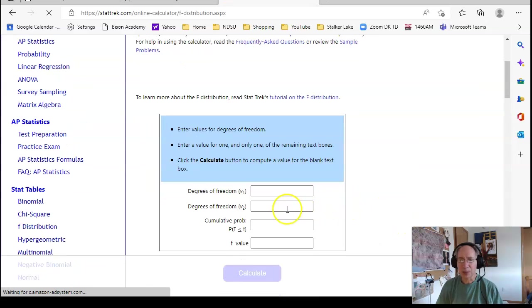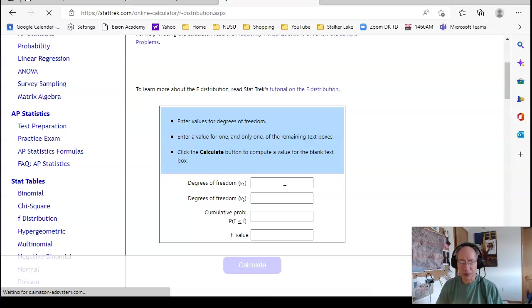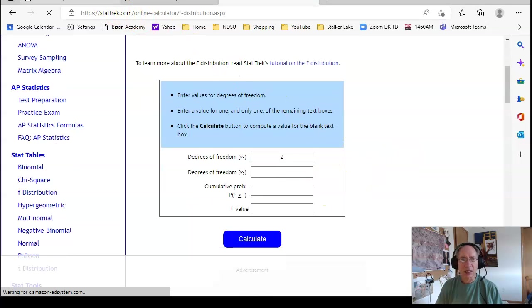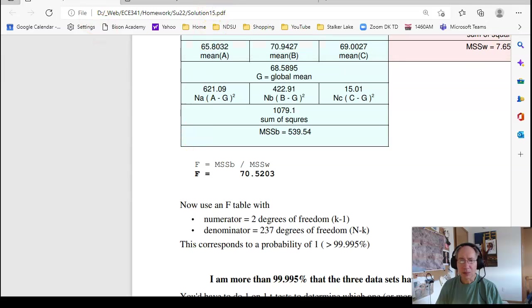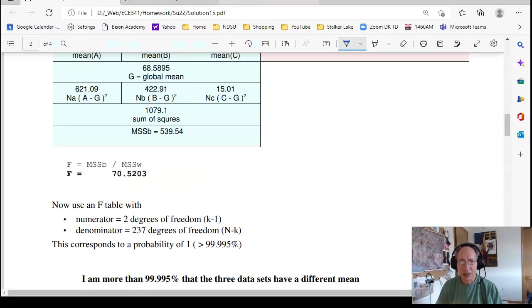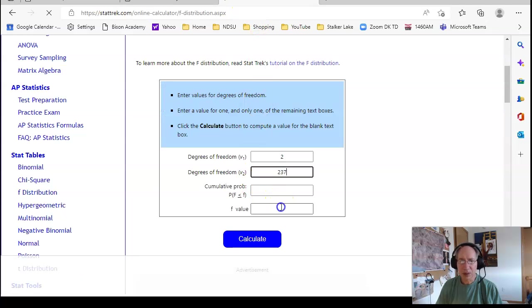Again, the numerator had two degrees of freedom—that's the number of columns minus one. The denominator was 237. I have 240 data points minus three columns, which gives you 237. My F-score was 70.52. Type in 70.52 and calculate.